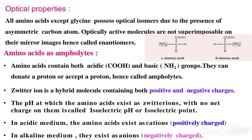Now coming towards the optical properties of amino acids: all amino acids except glycine possess optical isomers due to the presence of an asymmetric carbon atom. In glycine's structure, the central carbon has the same groups in two of its four valences, so it is not an asymmetric carbon atom, and therefore glycine does not have optical isomers.